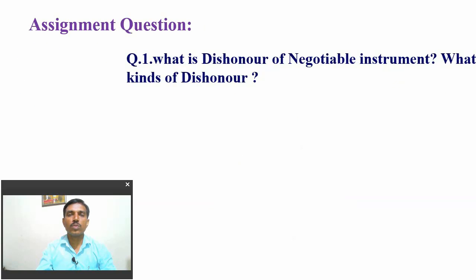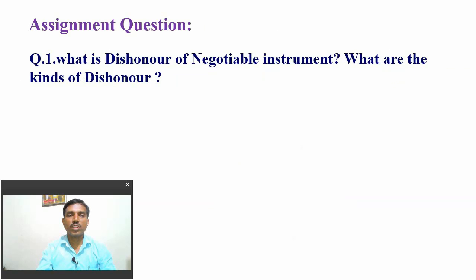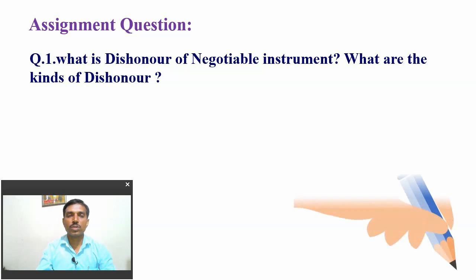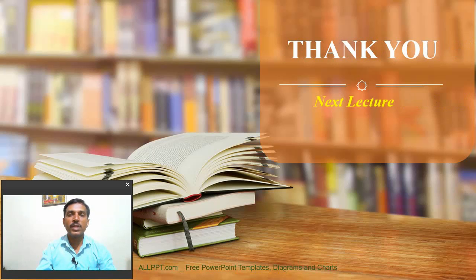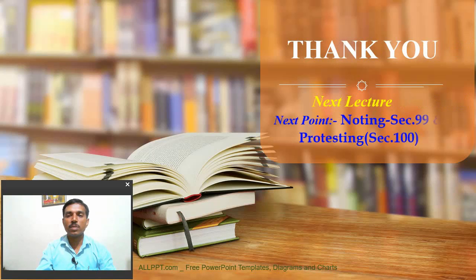Assignment question: What is the dishonor of negotiable instrument and what are the kinds of dishonor? There are two kinds — non-acceptance and non-payment. This question will be asked for 10 marks in internal exams as well as your annual examination. Thank you for watching this video. Next time we will meet with the next point, which is about noting under Section 99 and protesting under Section 100. Thank you very much.